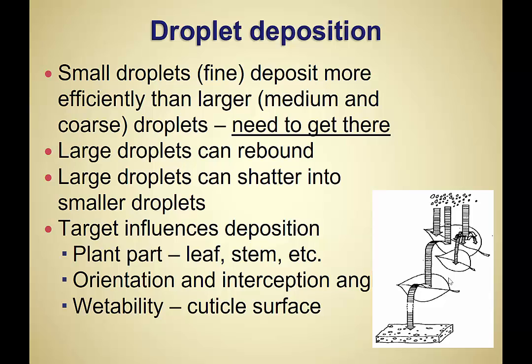It's not just the number of droplets — it's getting them there and getting them to stay on the plant surface. Fine droplets tend to deposit more efficiently than medium or coarse ones. Large droplets bounce, rebound, or shed and don't deposit on the target as well. The target itself has a big impact: is the leaf flat or hanging down, does it have hair, does it have a waxy cuticle? There's no one droplet size that works best for every plant.